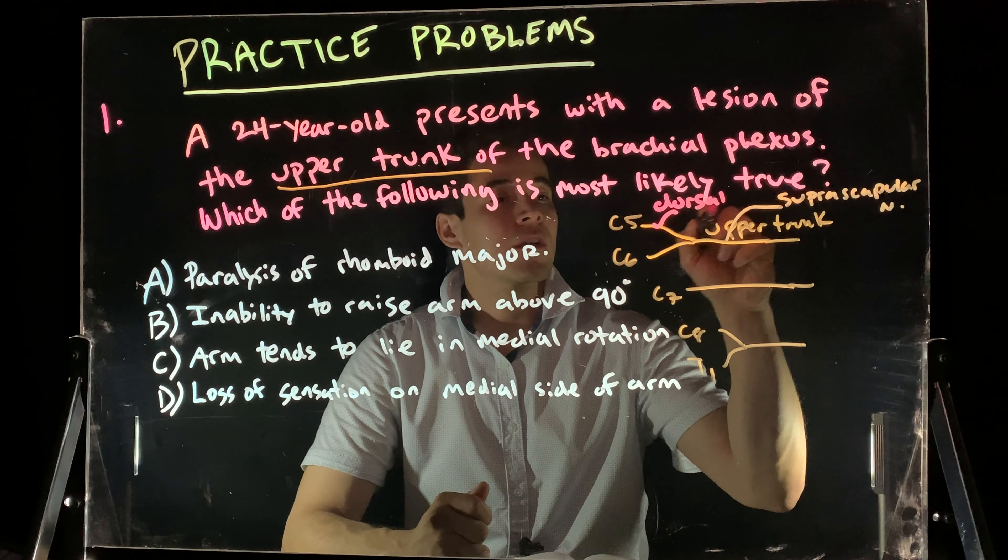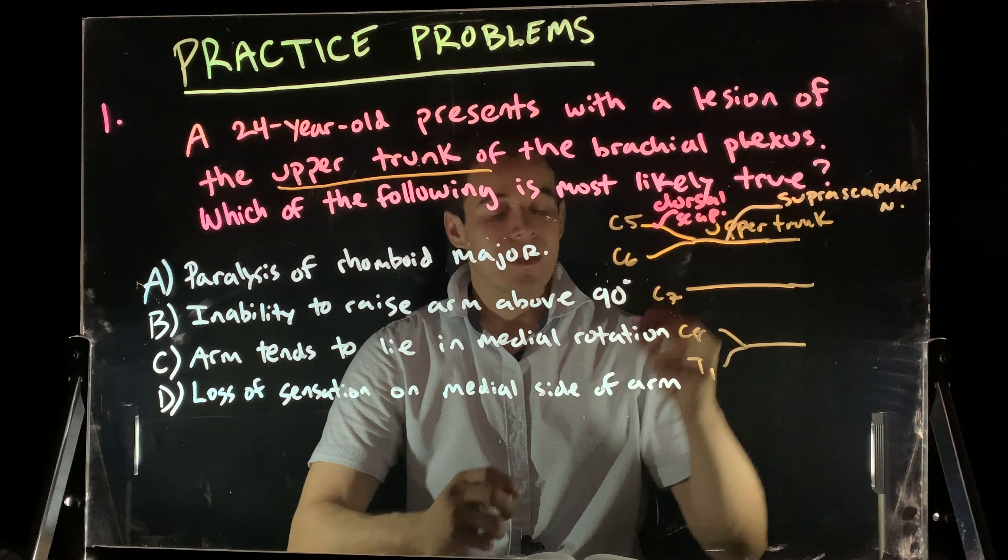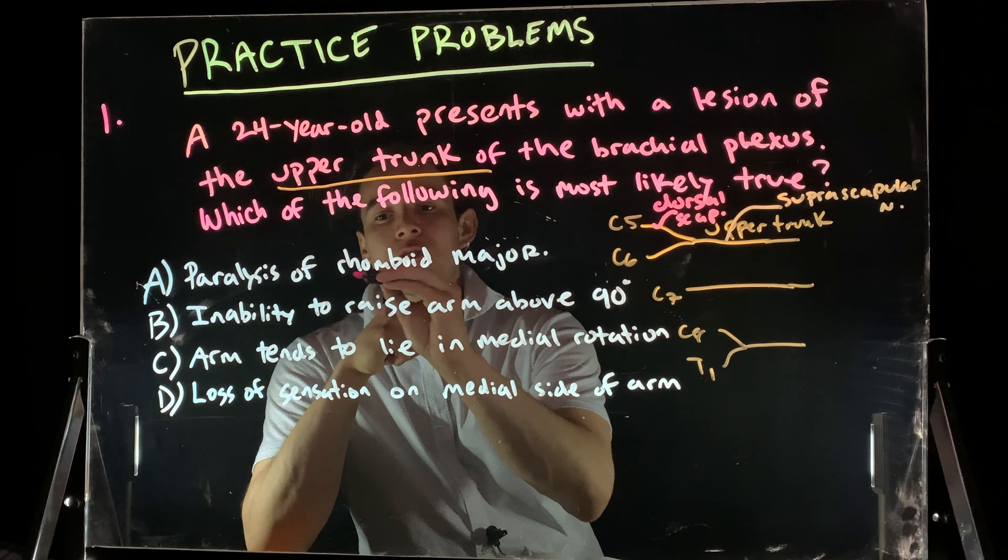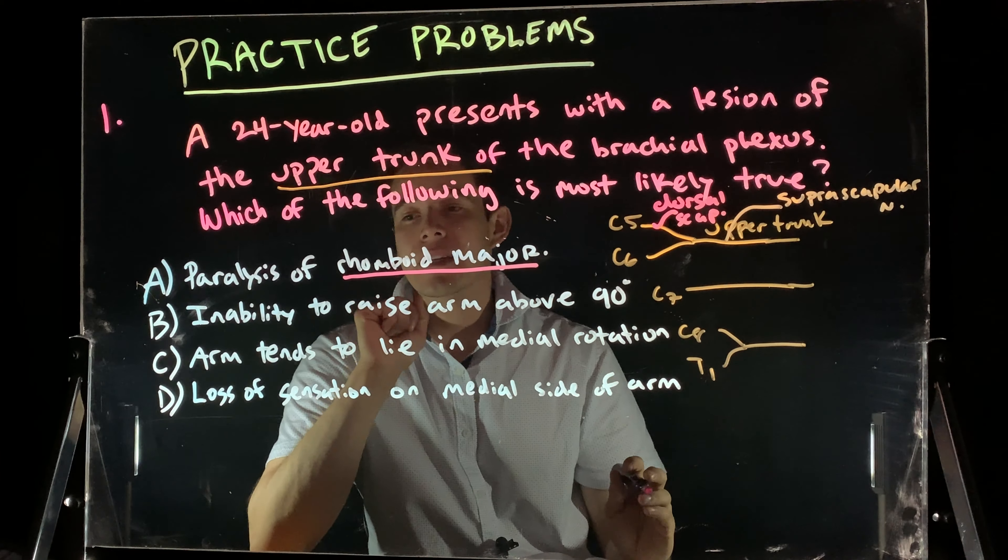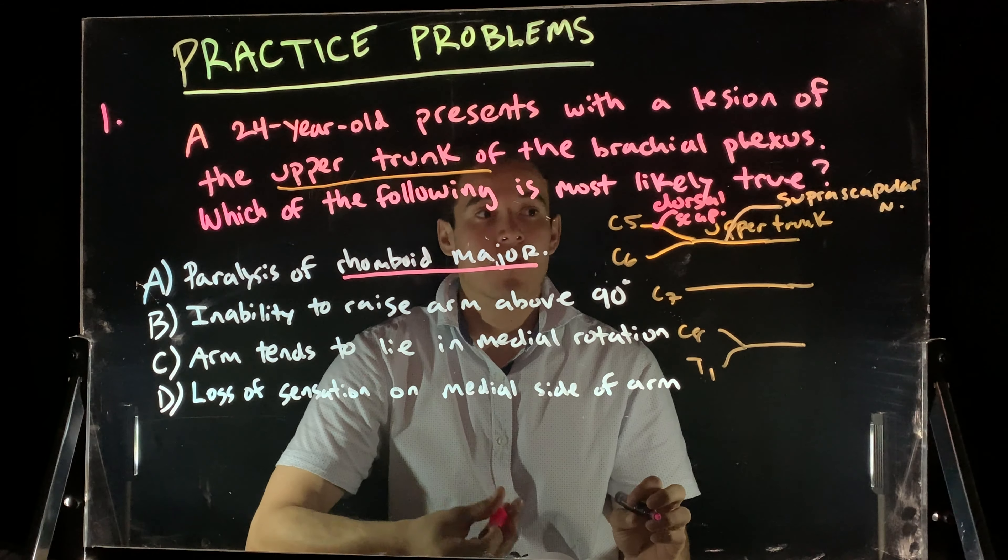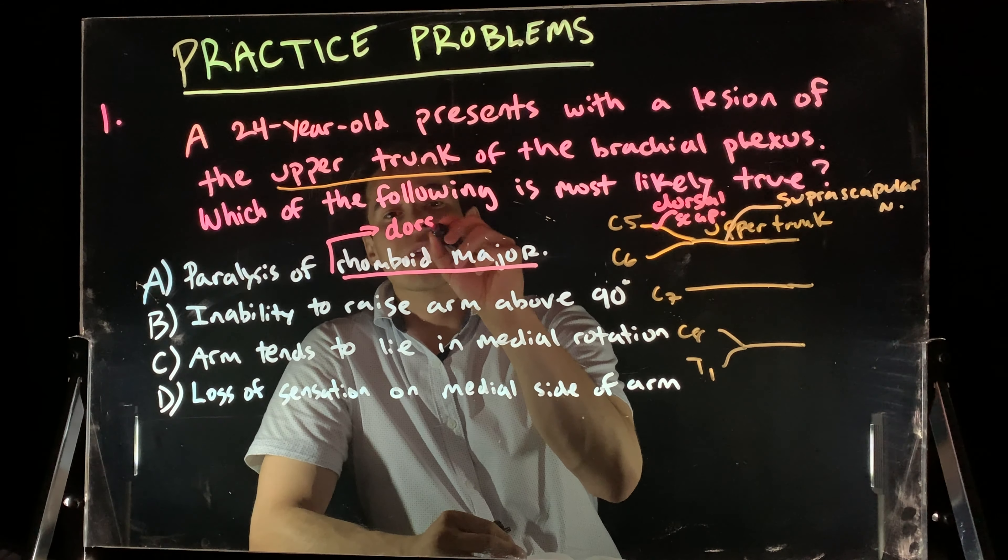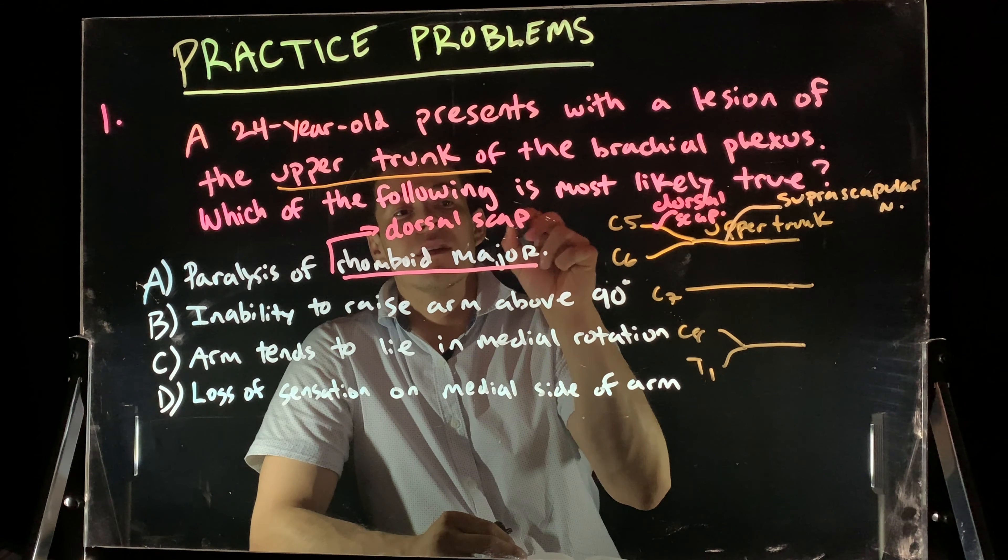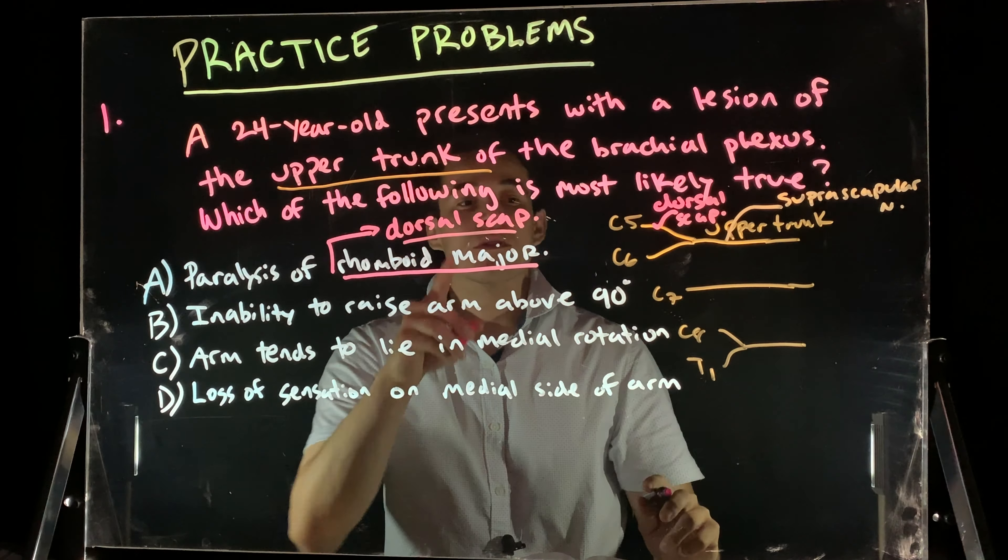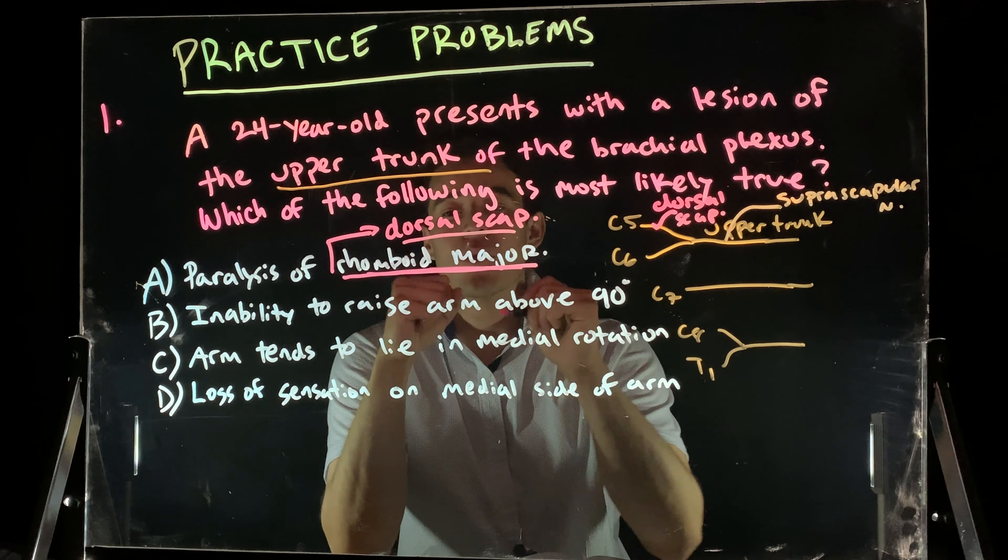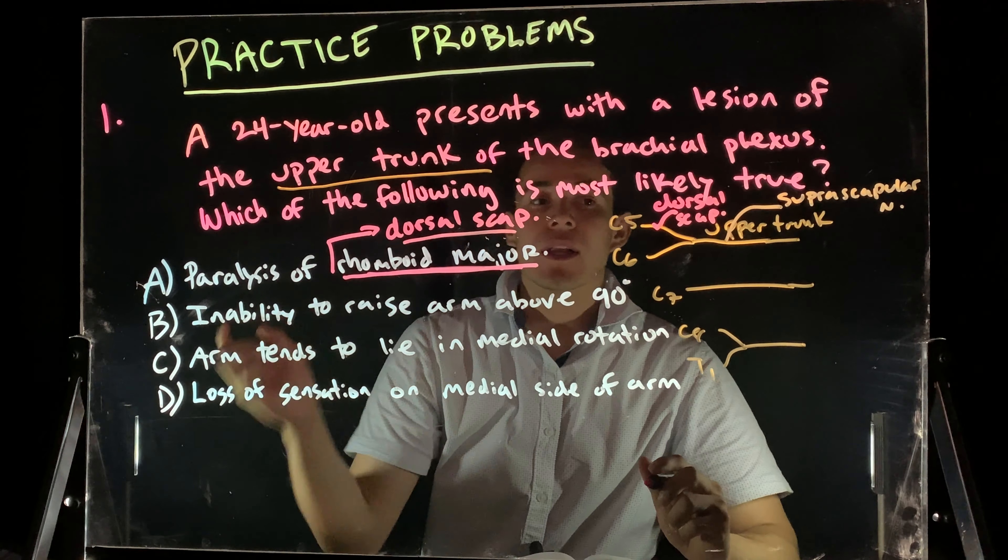So, just to kind of orient us, those might affect our answer choices. If we look at a paralysis of the rhomboid major, what do we know is the rhomboid major is innervated by which nerve? Yeah, so it's going to be dorsal scapular nerve. Our dorsal scapular nerve comes off of C5 and supplies the rhomboid major, the rhomboid minor, and the levator scapulae.